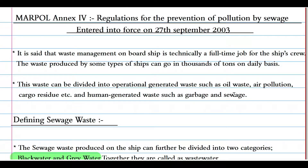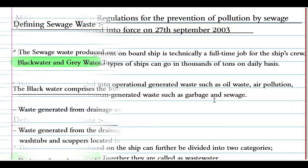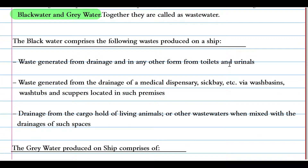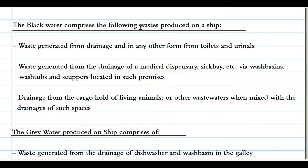The sewage waste produced on board a ship can be divided into two categories: black water and gray water. Together they are called wastewater. Black water comprises the following waste produced on a ship: waste generated from drainage in any form from toilets and urinals, and waste generated from the drainage of medical dispensaries and sickbays.